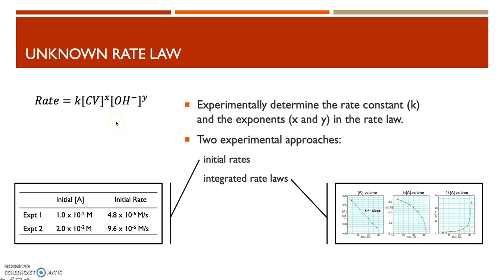For the unknown rate law, we have two approaches for determining the rate law exponents. The first is the initial rates approach, where we do multiple experiments changing the initial concentration to see how the rate changes. The second is the integrated rate laws approach, where we watch the concentration of a species change over time and plot it in multiple ways to see which yields a straight line, indicating the order of the reaction with respect to that reactant.